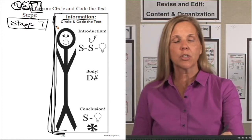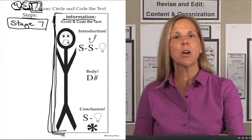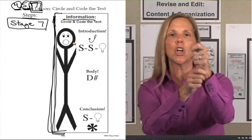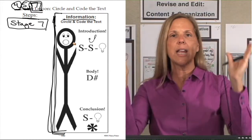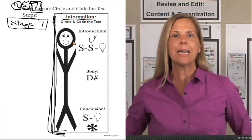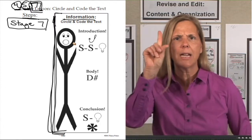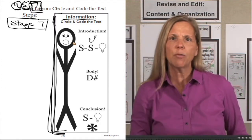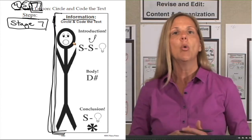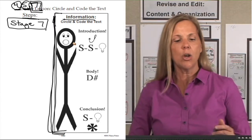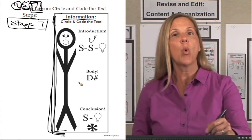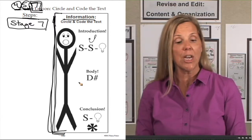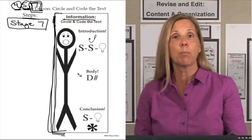At this point our students have the bookmark. They've said the chant: introduction, body, conclusion — hook, big idea, SS light bulb; body with details about the big idea; conclusion, repeat the big idea using different words, end it with a snap. We now know all the parts and what needs to be in those parts of this writing through our chant and the visual of our bookmark.